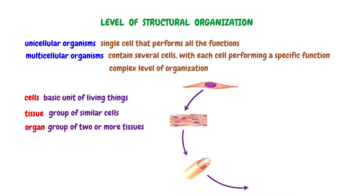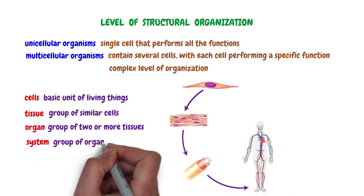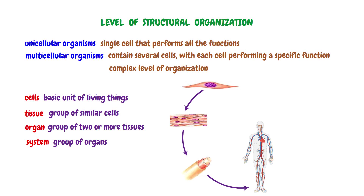The fourth level of complexity is the system. A system is a group of organs performing a particular function. The blood vessel and the heart, both organs, work together to form the cardiovascular system, which pumps and transports blood throughout the body.